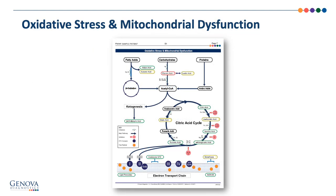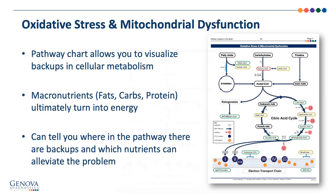The oxidative stress and mitochondrial dysfunction page, also known as the Krebs cycle page, allows you to understand how a functional nutrition evaluation works. It helps recognize that the NutriVal and Metabolomics Plus are both an intracellular assessment and a complex metabolic fingerprint of cellular function. On this page, the patient's results are highlighted in green, yellow, or red depending on whether the analyte is normal, borderline, or abnormal, allowing you to visualize where there are backups in cellular metabolism. This metabolic pathway shows how macronutrients such as fats, carbohydrates, and protein ultimately turn into energy for the cell as ATP.